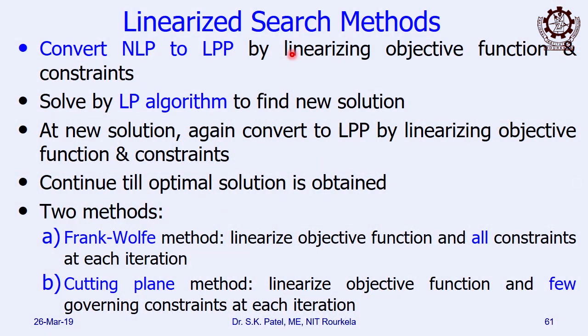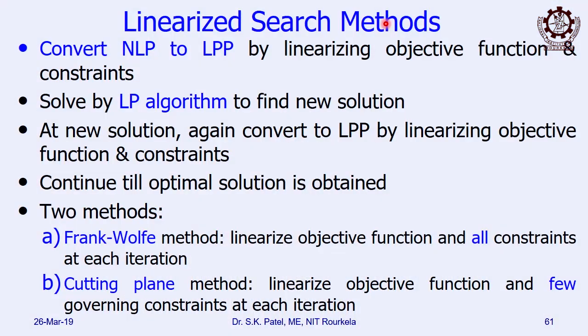Now, how to make it linear? We will learn that expression here — how we can make a non-linear programming expression into linear expressions. Under this group of methods, there are two algorithms: one is called the Frank-Wolf method, another is the cutting plane method. In your syllabus, only the cutting plane method is included. In Frank-Wolf method, we linearize the objective function and all the constraints at each iteration, whereas in the cutting plane method, only a few governing constraints at each iteration need to be linearized — whichever is necessary.